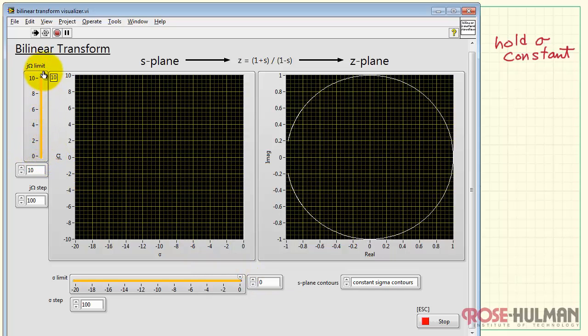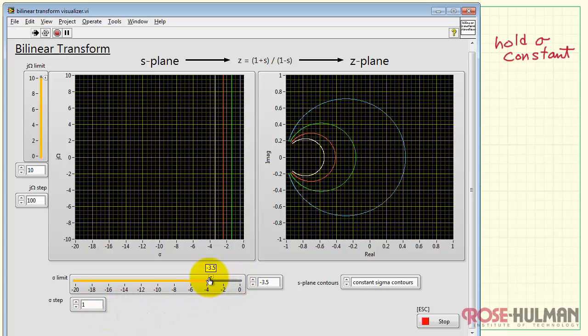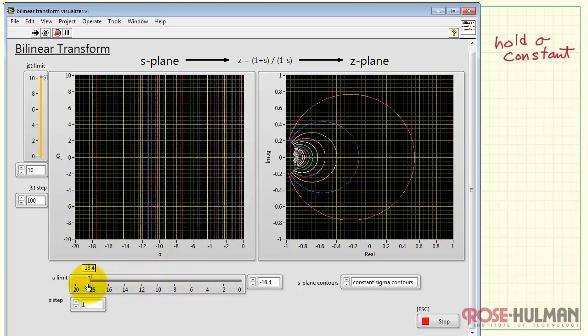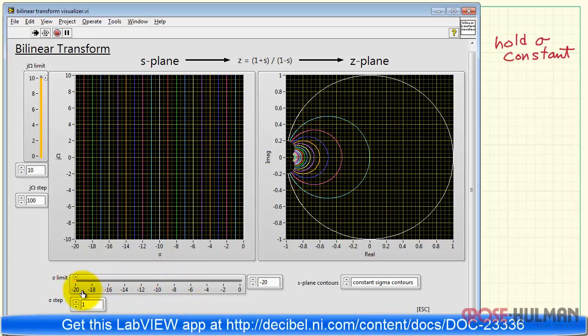So in terms of switching back to j omega axis variation here and trying to combine that with some variations along the sigma value, note that with this vertical line, I'm effectively taking the j omega axis and sliding it back and forth for different values of sigma, and note how we get circles and their radius varies according to the position along the sigma axis. Here we can get a whole family of vertical lines and see how they map.